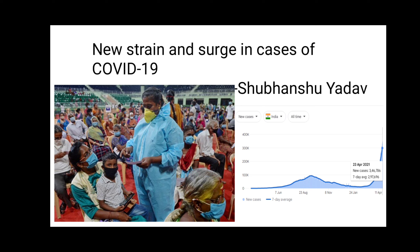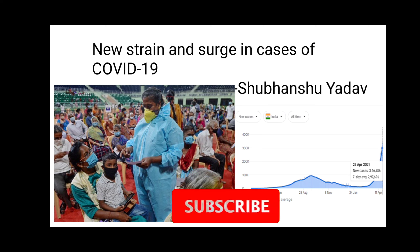One of the reasons behind it is the development of a new strain, or you can say new lineage, in India — that is called B.1.617. There are some mutations in it which make it more dangerous and more deadly. We will see that in the next few slides.